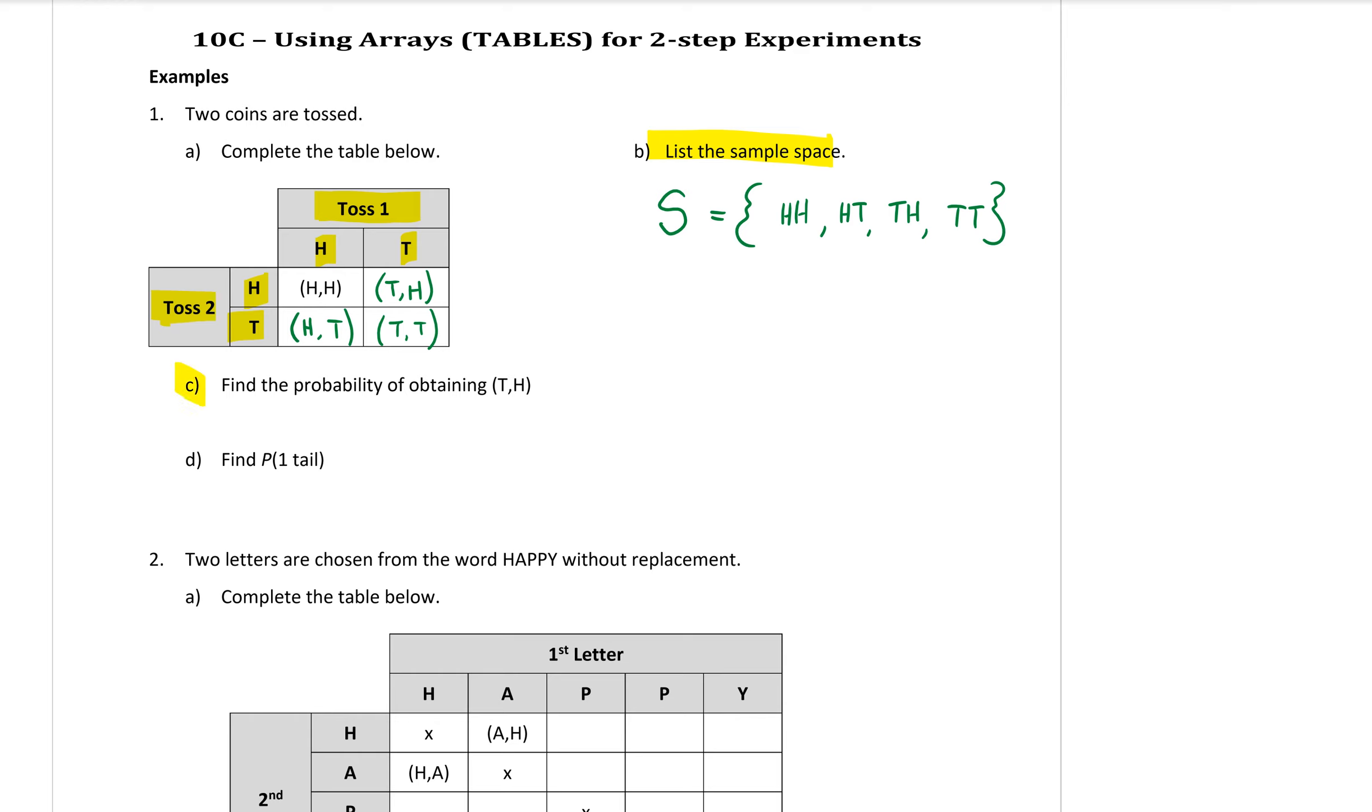Part c down here, find the probability of obtaining a tail then a head. Okay, so the order is important. It's not just a head and a tail or a tail and a head, it has to be the tail first, head second. Now looking at my table, tail first then a head is this option here that I'm highlighting. Not this one over here, that is different order. So there is only one possibility out of the four of getting a tail then a head.